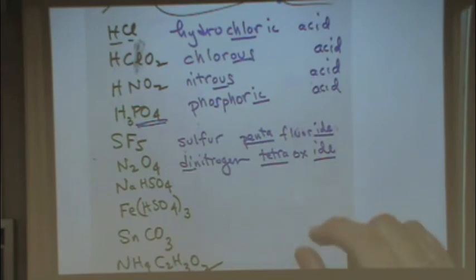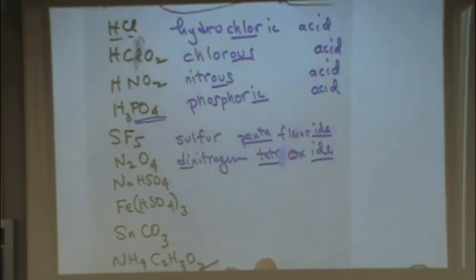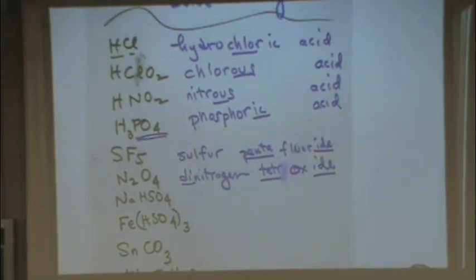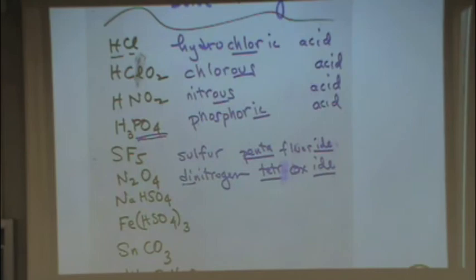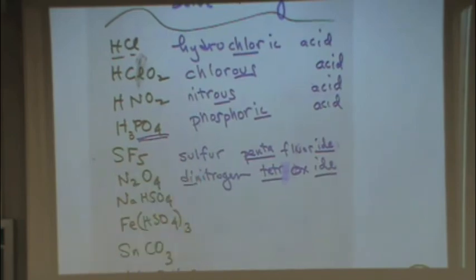For molecular compounds — no metal present — you name subscripts using prefixes: mono, di, tri, tetra, penta, etc. Example: SF5 is sulfur pentafluoride. Example: N2O4 is dinitrogen tetroxide — note the 'a' in tetra drops before 'oxide' since there are two vowels meeting. Don't use the mono prefix on the first element — CO is carbon monoxide, not monocarbon monoxide — but you do use mono on the second element if needed.